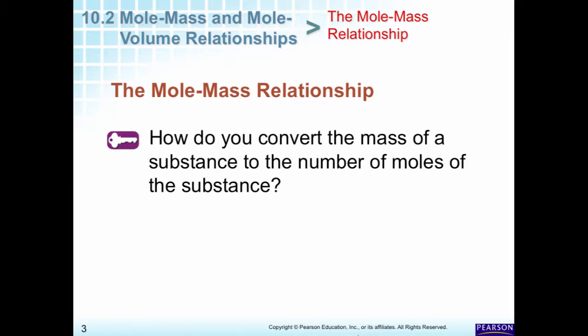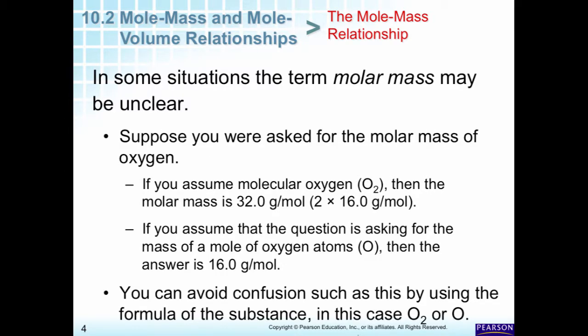So we want to be able to convert from mass to the number of moles. This is called the mole-mass relationship. Molar mass sometimes can be unclear. Suppose you wanted to know the molar mass of oxygen. Usually we could say oxygen exists as O2, so for O2 we would have two times the molar mass, two times 16 grams, so that would be 32 grams per mole. However, if they were asking us for atomic oxygen, that would only be 16 grams per mole. So it's probably better to use the symbol, in this case O2 or O, when you're trying to find that out.